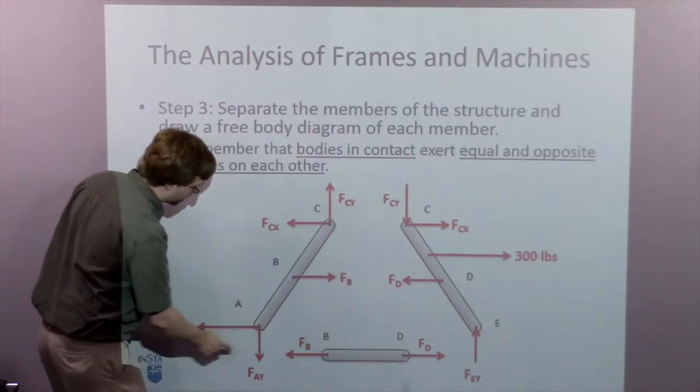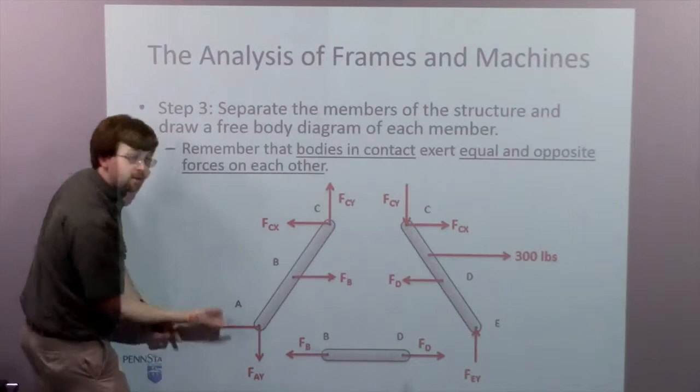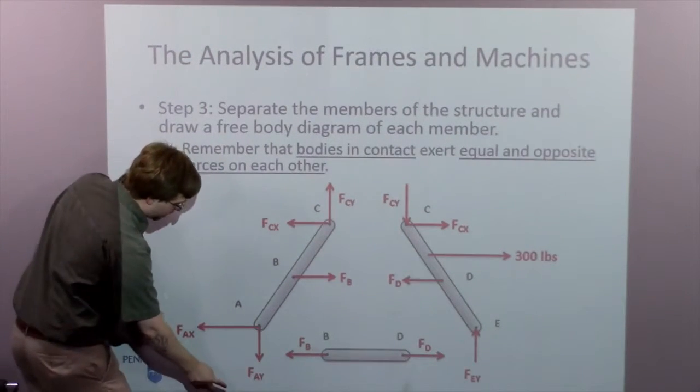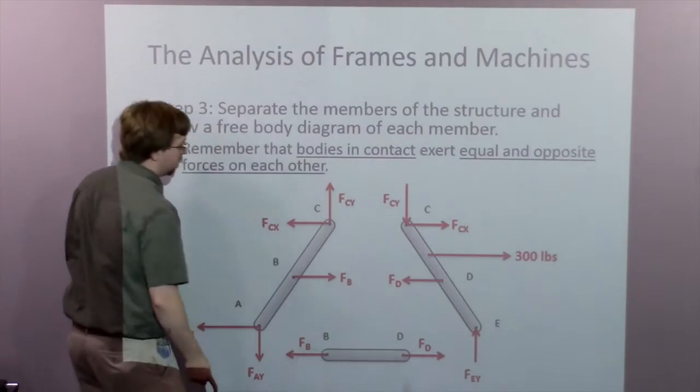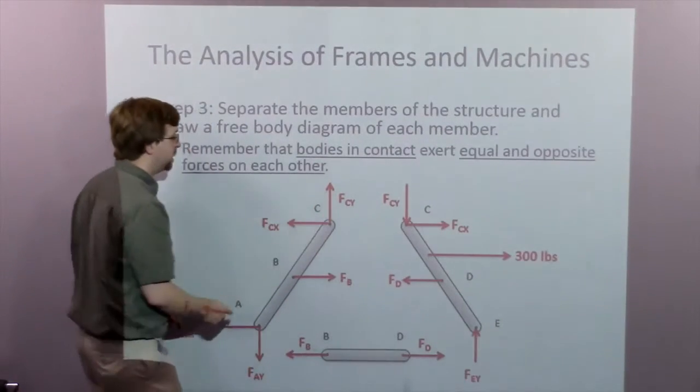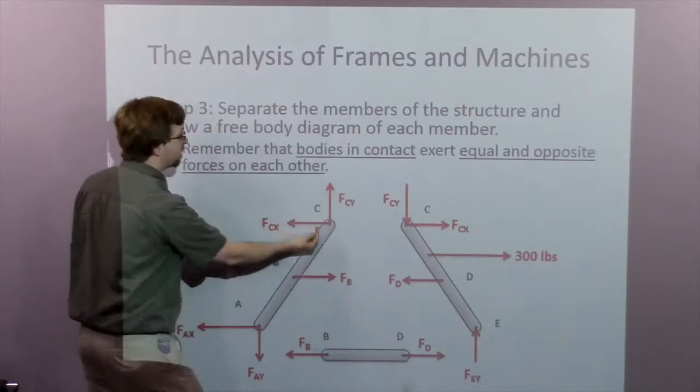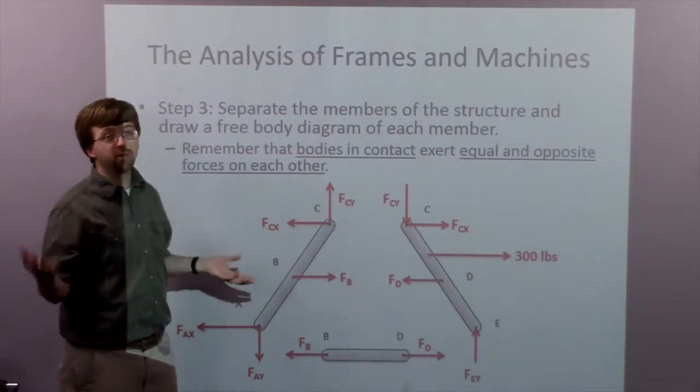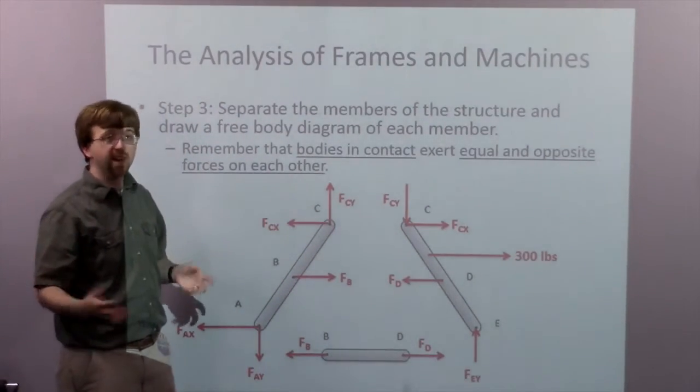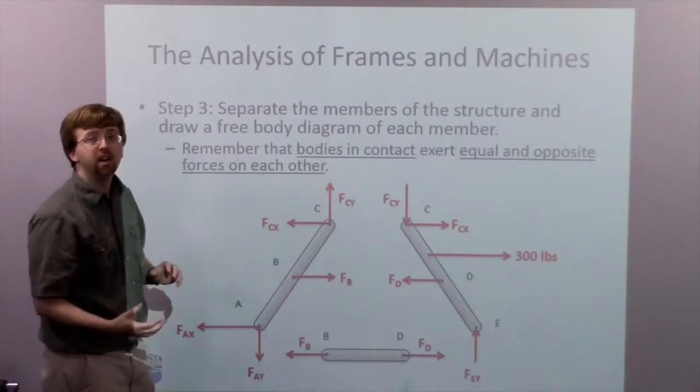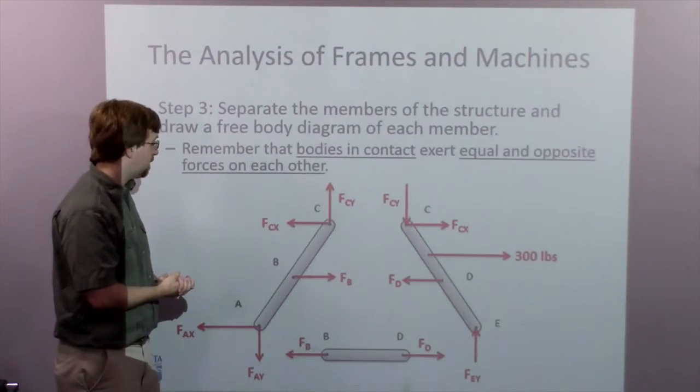I had the pin joint down here at the bottom. And at this point, if I solved step two, I would know FAX and FAY. Up here at the top, I've got another pin joint with the potential for force in the X and forces in the Y. At this point, I don't know the direction of the force in the X or the Y. I'm just going to draw it in. The direction on that first side doesn't really matter.